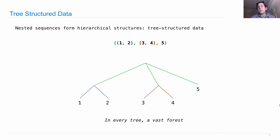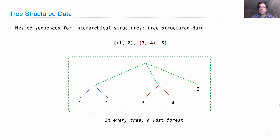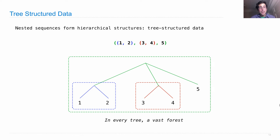What do I mean by every tree containing a vast forest? Well, here's a tree, but there's a tree as well, and there's a tree as well. It's quite natural to call each leaf of the tree a tree itself. The leaves are one, one, one, one, and the fifth. So if we think of all of these things that I've circled as trees, then tree processing becomes quite simple using recursive functions.